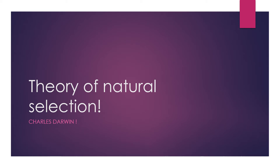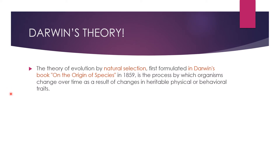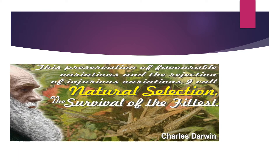Hello everyone. Today let us learn about the theory of natural selection by Charles Darwin. The theory of evolution by natural selection, first formulated by Charles Darwin in the book 'On the Origin of Species' in the year 1859, is the process by which organisms change over time as a result of changes in heritable physical and behavioral traits. The preservation of favorable variations and the rejection of injurious variations was called the theory of natural selection, or the survival of the fittest, by Charles Darwin.